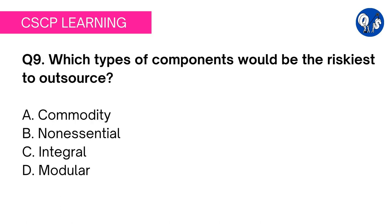Question 9: which types of components would be the riskiest to outsource? Option A: commodity. Option B: non-essential. Option C: integral. Option D: modular. Option A: commodity — if your product has become a commodity, there is no harm outsourcing it since there is no secret recipe. A commodity is a product in a maturity stage that has already captured the market. Even if a third party copies the design, they won't be able to sell it without being an established brand. So this is not the correct choice.